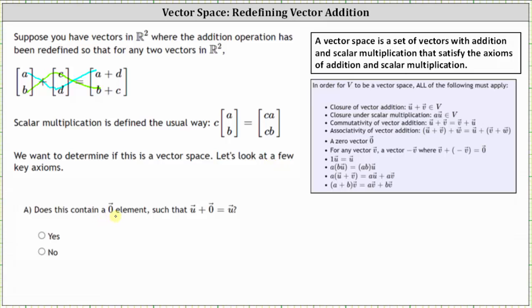Does this contain the zero vector element such that vector u plus a zero vector equals vector u? Let's let vector u have components u sub one and u sub two plus a zero vector, which should be the two by one matrix where both entries are zero. And now let's check the sum under the new definition of addition. The first entry of the sum is u sub one plus zero, which is still u sub one. And the second entry is u sub two plus zero, which is still u sub two. So we have satisfied the axiom that vector u plus a zero vector equals vector u, and therefore the set does contain the zero vector.